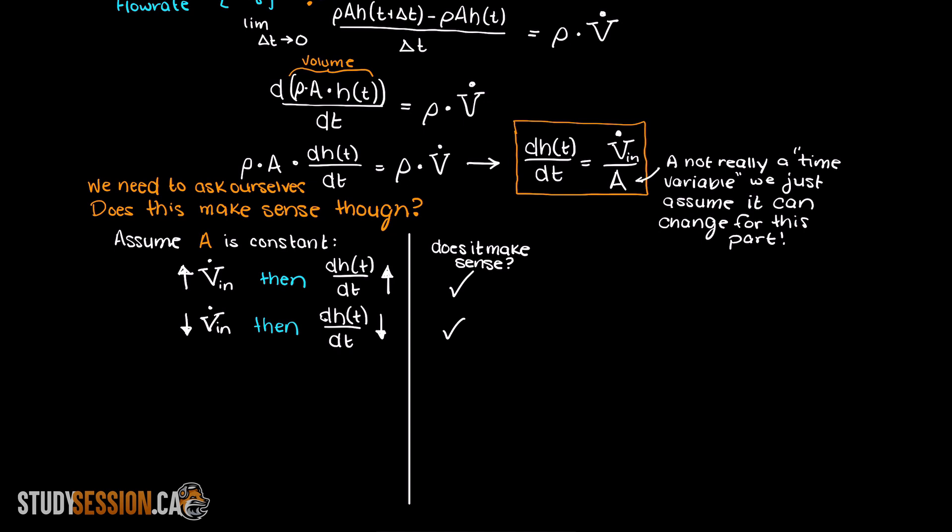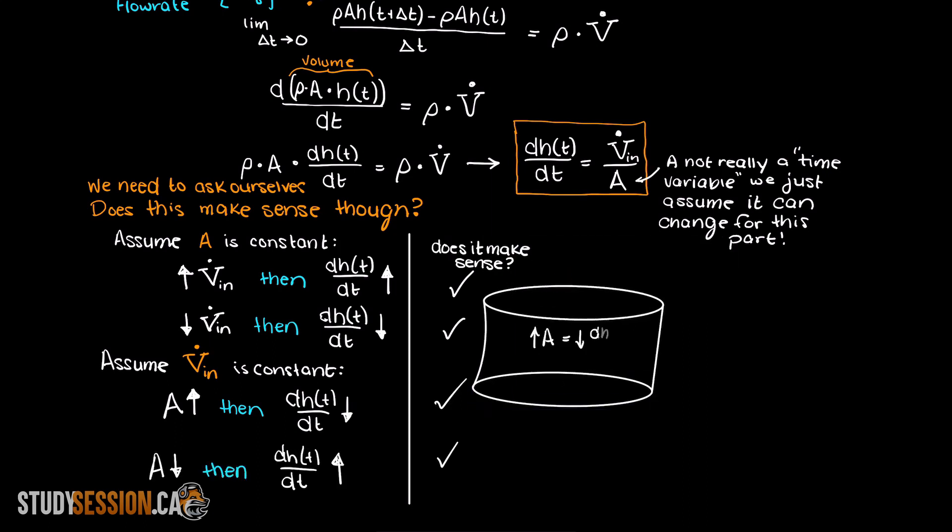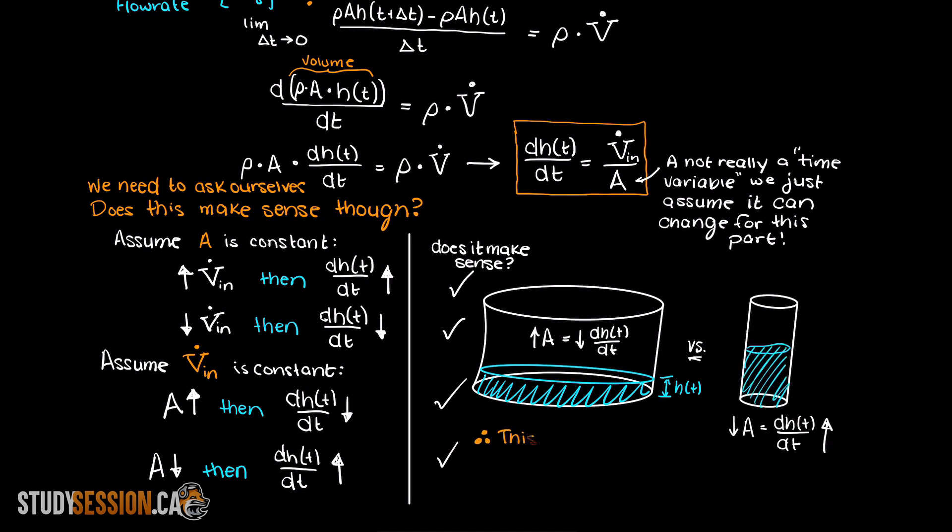Lastly, what if we changed the area of our bucket and kept the flow rate into our control volume the same? Well, with a larger area it would only make sense for the rate of change of the height in the bucket to decrease. Therefore we can definitively say that this ODE makes sense.